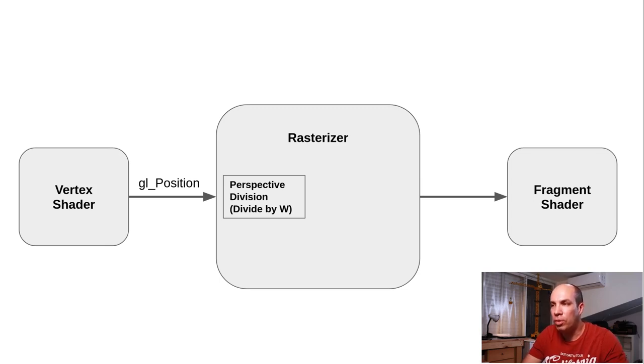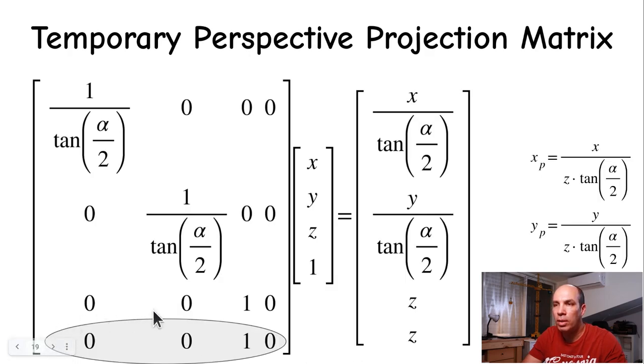This stage is called perspective division and it cannot be turned off. We haven't noticed it so far in the previous tutorial simply because we made sure to put one in the w so it had no effect but believe me it was there. As you can see the whole system of 3D in OpenGL is a delicate combination of software and hardware. In your vertex shader you need to multiply your vertices by the projection matrix. This matrix contains only part of the projection equation. The projection is complete when we go through the perspective division in the rasterizer. And to make this part work we have to copy the z value into the w component of the gl_position variable. This is very simple to do using the following line in the projection matrix.